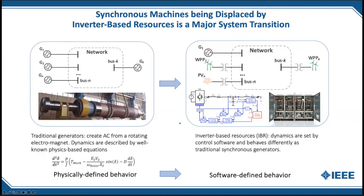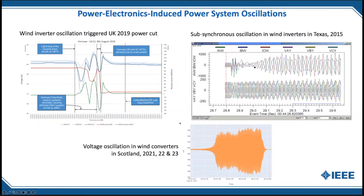We know this is a problem because we see around the world in various places oscillations develop that weren't anticipated from the connection studies. And worse than that, when a diagnostic investigation is run after the event, sometimes they don't even show up in those models. So how do we prepare ourselves for assuring stability of systems when faced with these problems?